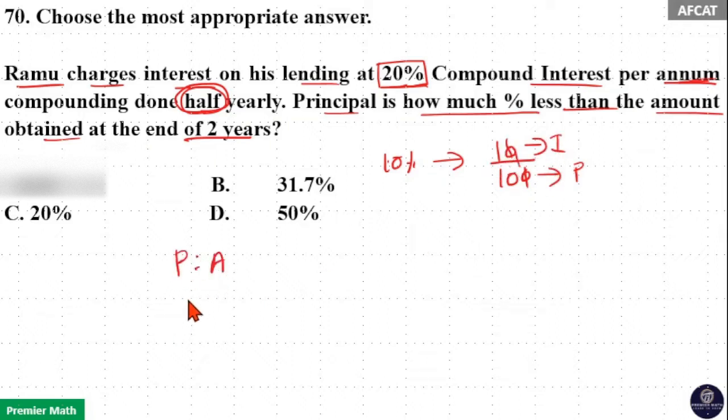Now take the ratio of principle and amount. Principle is 10 part and amount is interest plus principle, that is 10 plus 1, 11 part for 6 months.